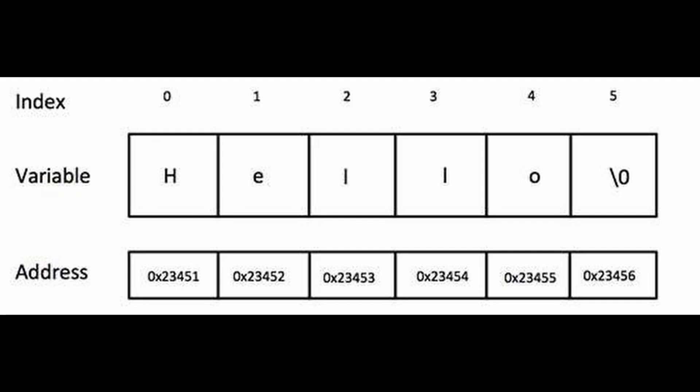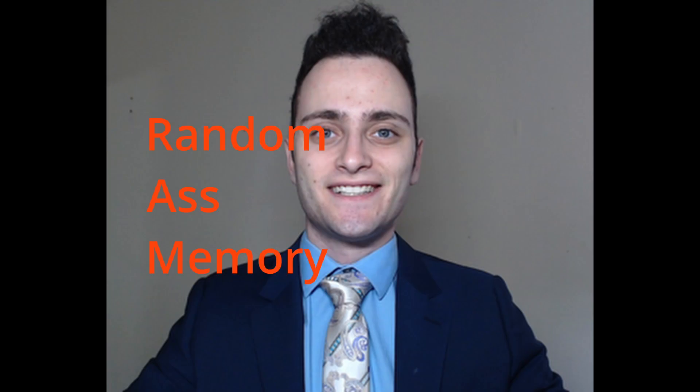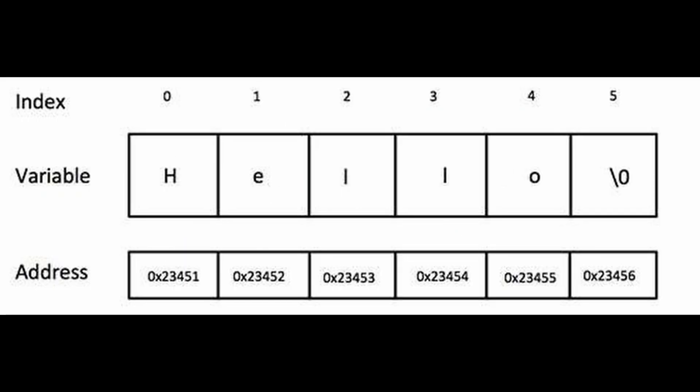But why does this work? The reason is because the pointer is containing the address, not just the character. Every value and function in your program is stored temporarily in your RAM, also known as random ass memory. This is the memory that is cleared every time you turn off your program or your computer. All values have a specific place in this memory, and it is this memory that the pointer is storing.